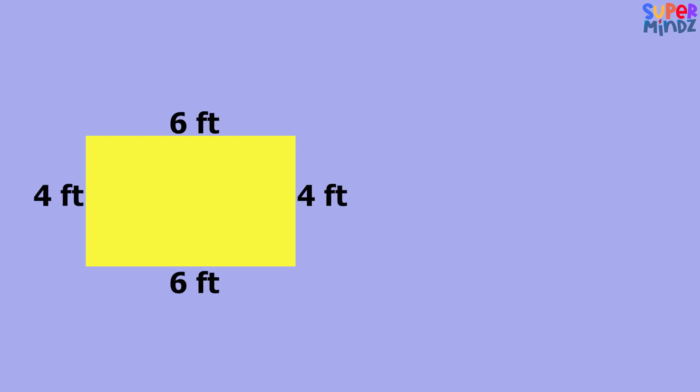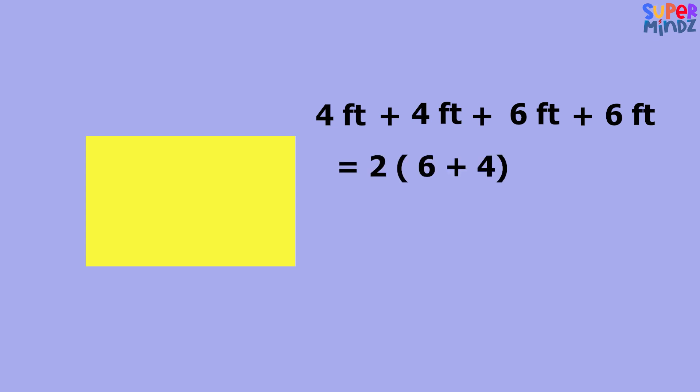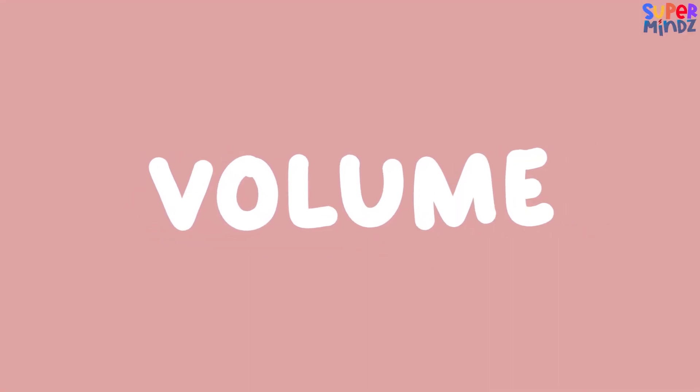and width of four feet, what's the perimeter? That's correct, it's two times the sum of the length and width, which is two times six plus four, giving us 20 feet again. Last but not least, volume. Let's say